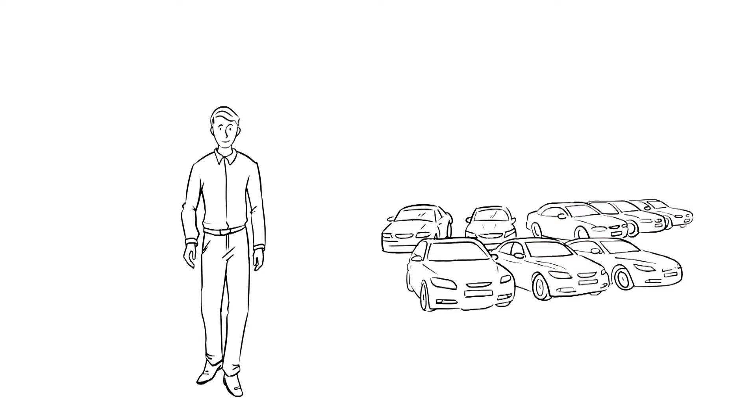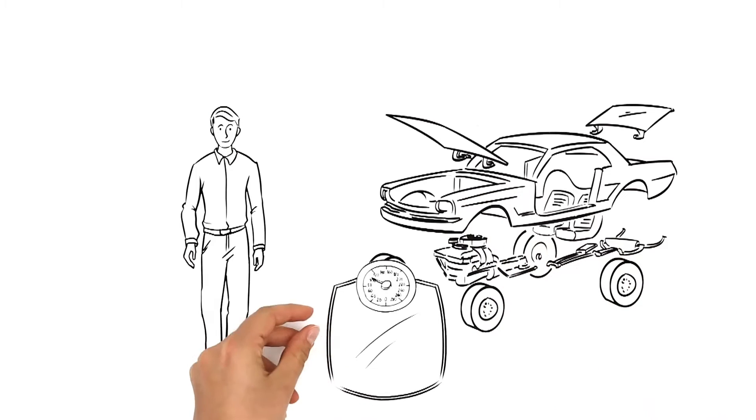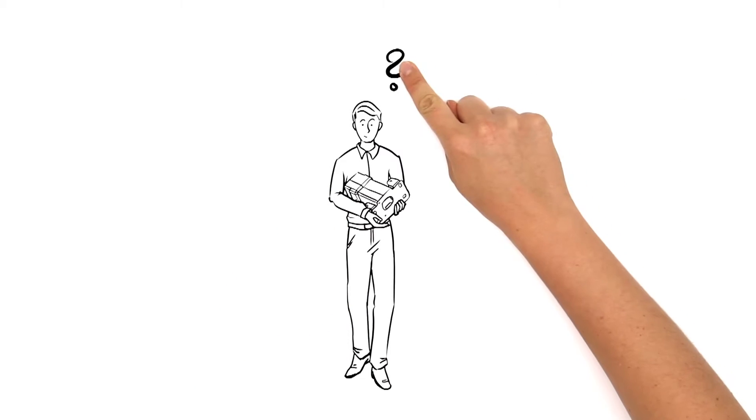He's currently standing in front of a competitor's dismantled vehicle, studying panel thickness, weight and material. He ponders as he looks at one part in particular. Why have they designed it in this way?